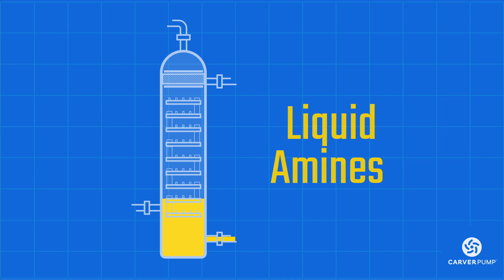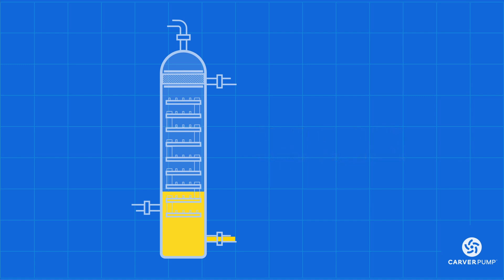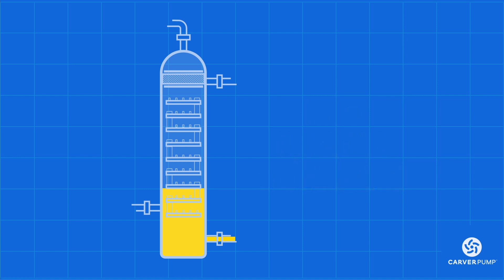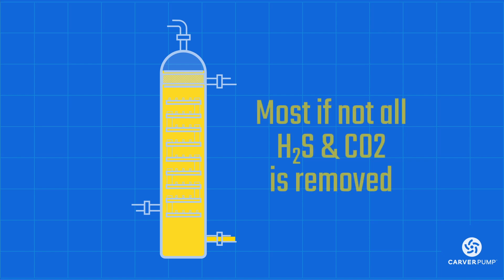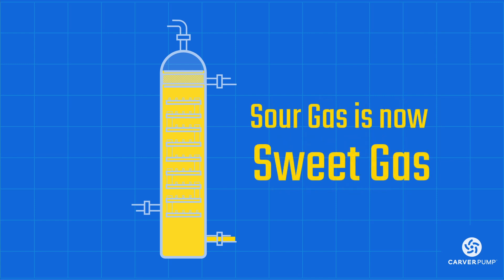Gas enters the column from the bottom. As it rises, it comes into contact with the liquid amines on the bottom tray. The amine then absorbs the H2S and CO2 from the gas before it rises into the next tray, where even more of these compounds are absorbed. By the time the gas gets to the top of the column and is discharged, most if not all of the H2S and CO2 should be removed.